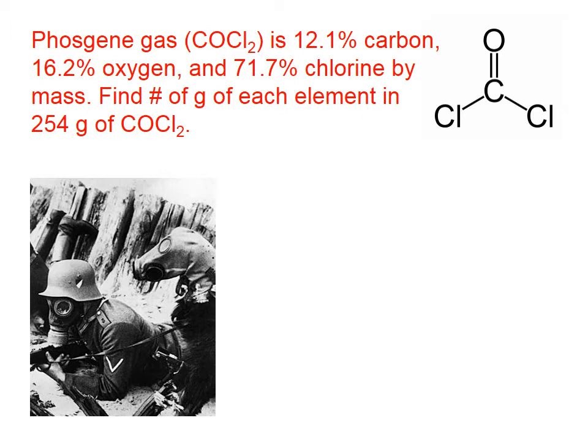In the upper right, I've shown a picture — a model — of one molecule of phosgene, which consists of one oxygen atom, one carbon atom, and two chlorine atoms. We might wonder: why isn't phosgene 50% chlorine? Because there are two chlorine atoms out of a total of four. In terms of number of atoms, phosgene is 50% chlorine, but by mass it's 71.7% chlorine.